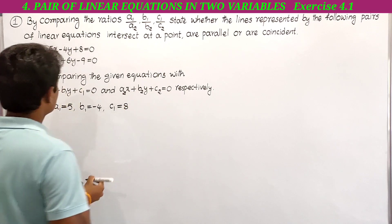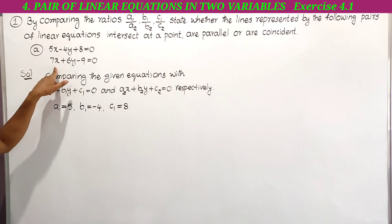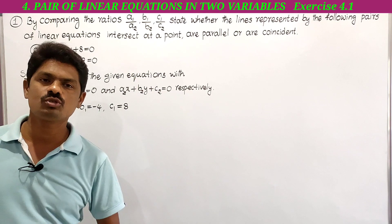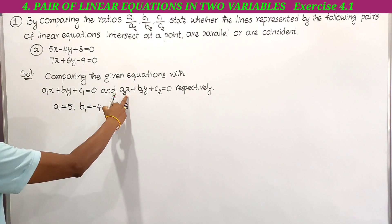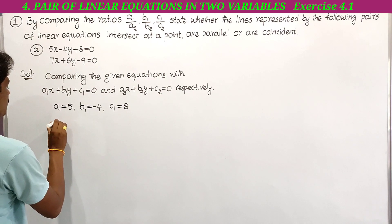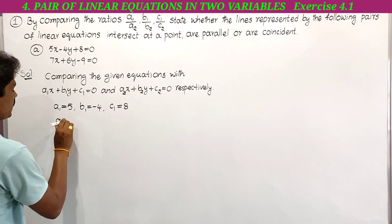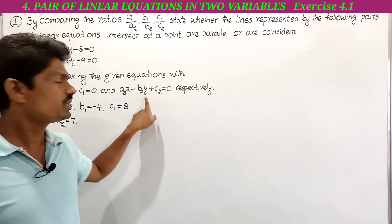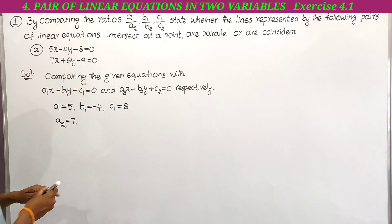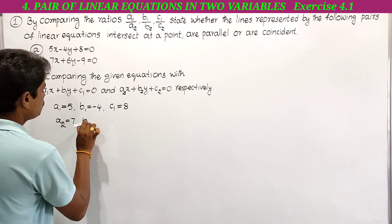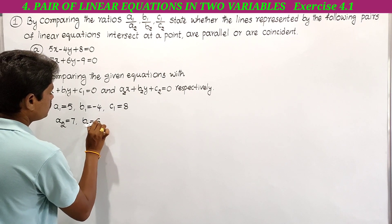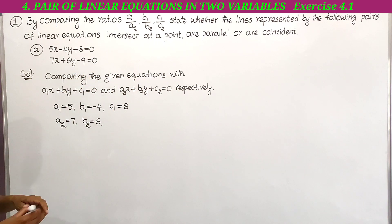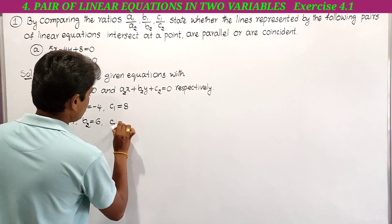Therefore c1 equal to 8. Next we have to compare the second equation with a2x plus b2y plus c2 equal to 0. Here a2 is the x coefficient; here x coefficient is 7, so a2 becomes 7. Next, b2 is the y coefficient; here y coefficient is 6, so b2 is equal to 6. Next, c2 is the constant; here the constant is minus 9, so c2 becomes minus 9.